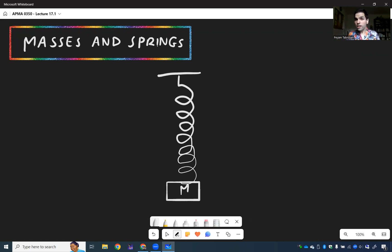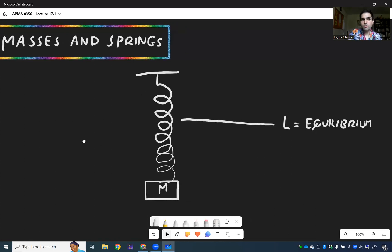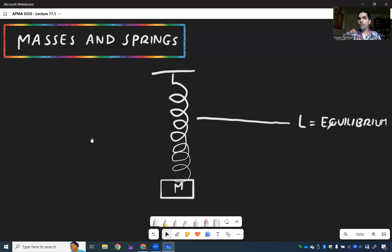Then what we want to consider is not the position of the mass, but rather what is called the displacement from the equilibrium position. So suppose L is the equilibrium. Then this mass M just bounces back and forth from that equilibrium position. And the displacement, we call this Y of T.